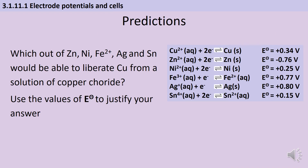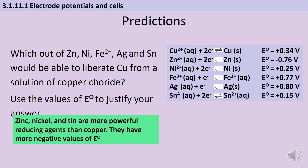We can also start to use this data to make predictions about whether or not chemical reactions will happen. For instance, we can ask whether a series of metals or metal ions would be able to liberate copper from a solution of copper chloride. The answer is that zinc, nickel, and tin are more powerful reducing agents than copper because they have more negative values for their standard potential, and therefore they would be able to displace the copper — whereas the others wouldn't.